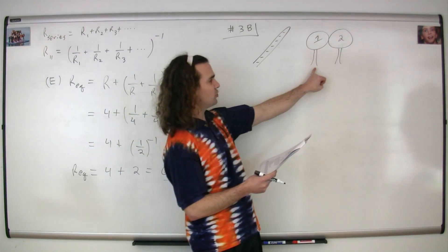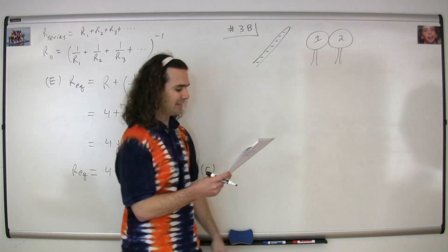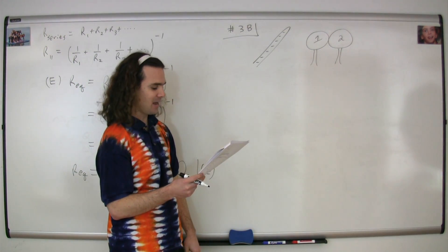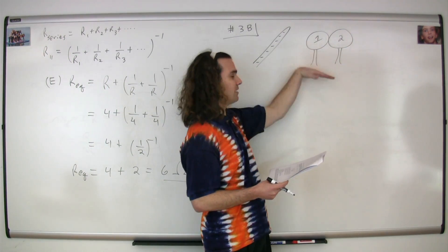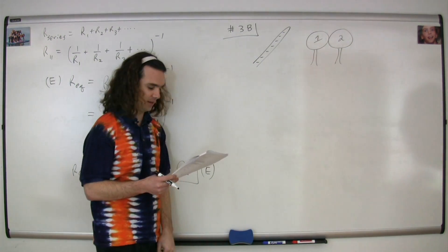Question number 38. Two initially uncharged conductors, one and two, are mounted on insulating stands and are in contact, so they're touching one another so charge can flow between the two of them, but they're insulated from anything else so the charge can't flow anywhere else.